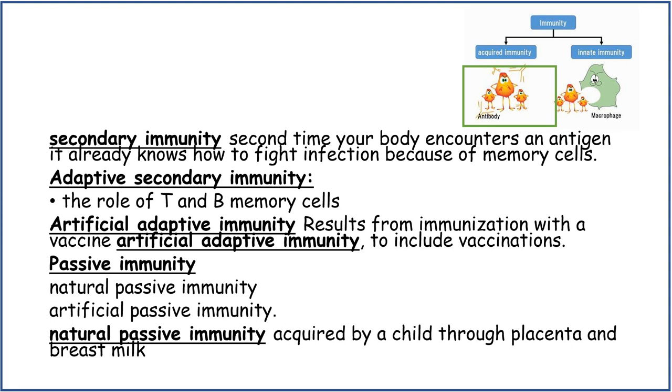Passive immunity: you need to know natural passive and artificial passive. Natural passive immunity is acquired by a child through the placenta and breast milk.